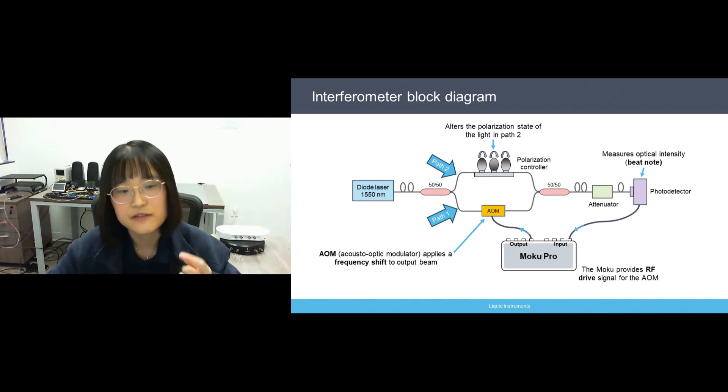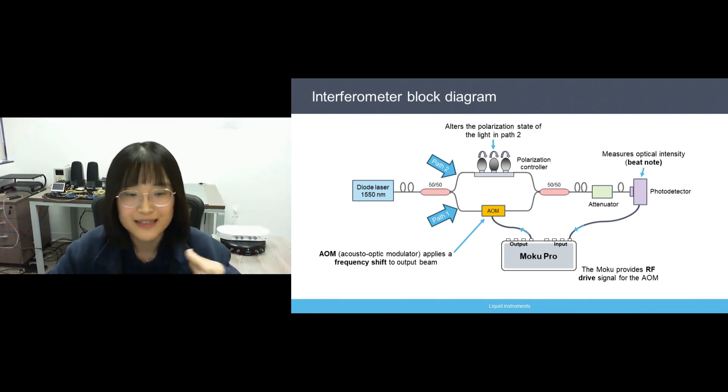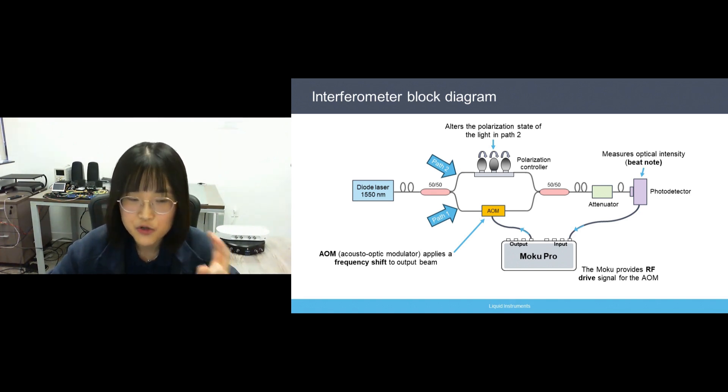On the other hand, path 2 travels through a polarization controller, which alters the polarization state of the light in path 2. So the matched polarization states ensure a high contrast interference between the two arms.